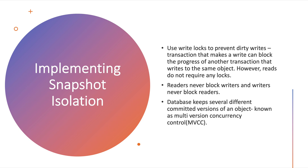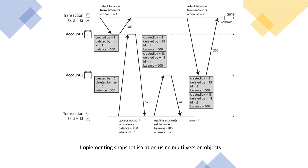The database must potentially keep several different committed versions of an object, because various in-progress transactions may need to see the state of the database at different points in time. Because it maintains several versions of an object side by side, this technique is known as Multi-Version Concurrency Control (MVCC). Let's see how this MVCC-based snapshot isolation is implemented in PostgreSQL.